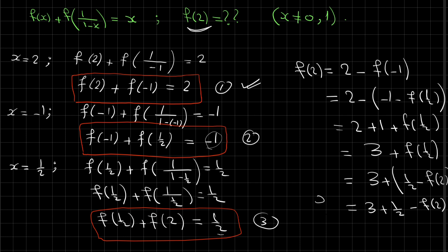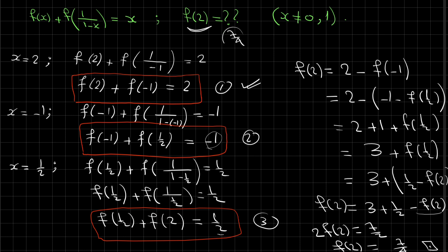So f(2) = 3 + 1/2 - f(2). Moving f(2) to the other side: 2·f(2) = 3 + 1/2 = 7/2. Therefore f(2) = 7/2 ÷ 2 = 7/4. So the final answer is f(2) = 7/4.